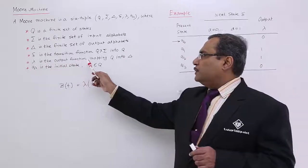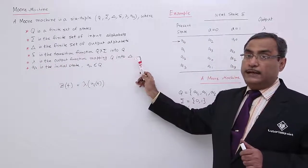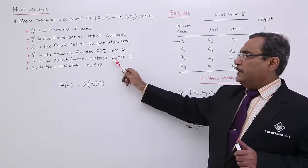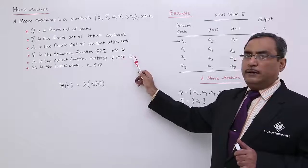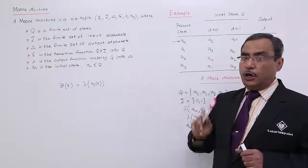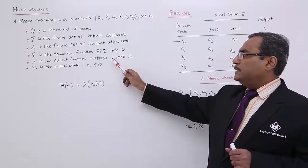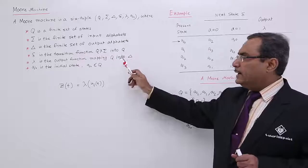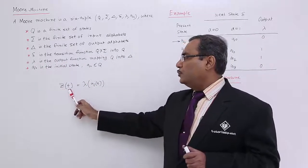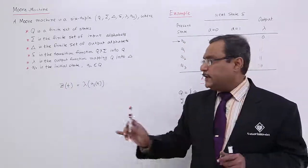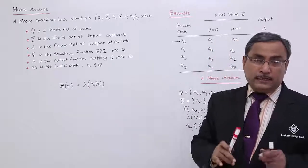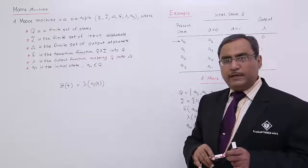Lambda is the output function mapping Q into delta. That is the difference with the Mealy machine. In case of Mealy machine, Q cross sigma maps into delta. But here, depending upon the present state, the output will be decided not on the input. The present state will decide the output. We have written that output at the tth instant, that is at the current instant, will be lambda, the output function of q of t. That is the basic difference between Mealy machine and Moore machine.